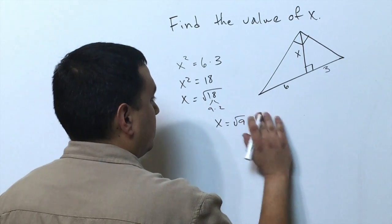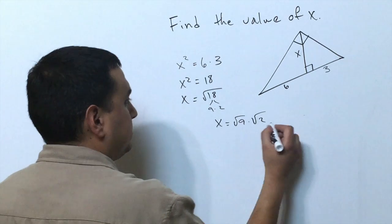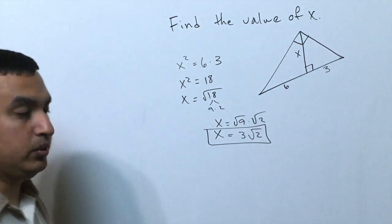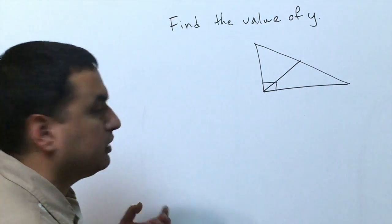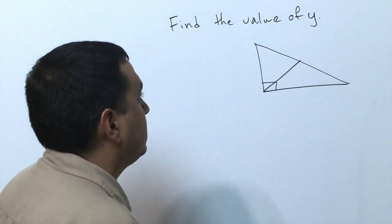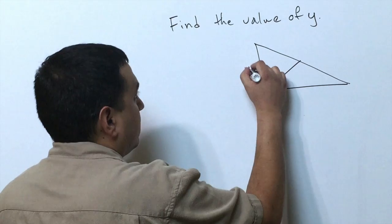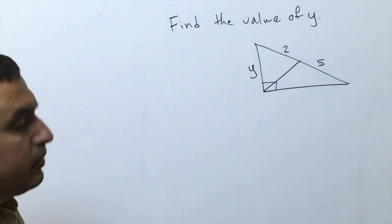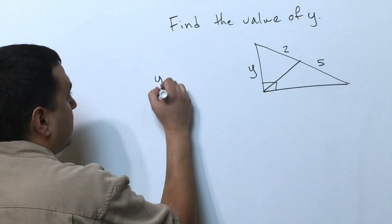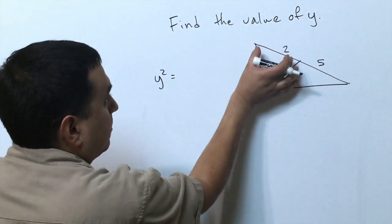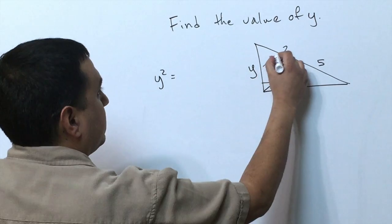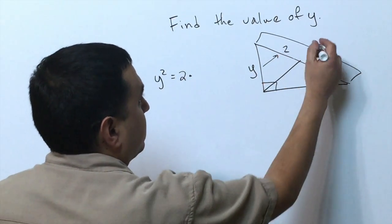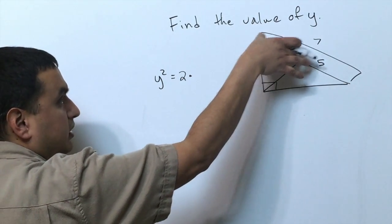The other part of this lesson deals with the geometric mean leg theorem. Say I want this value y, and I'm given that this side is 2 and this piece is 5. The theorem says that y squared is going to equal whatever piece is opposite it times the length of the hypotenuse. If this is 2 and this is 5, that's 7, so it's this piece times the whole hypotenuse. That means y squared equals 2 times 7, which is 14.